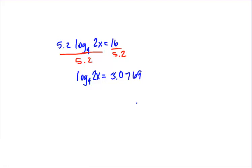When you're working with logarithms, always carry through at least 3 decimal places, and usually you want to go with 4 — because logarithms grow so slowly that 4 decimal places gives you a more accurate answer. Once you get here, go ahead and rewrite the logarithm in exponential form. Take the base of the log, which is 4 — a logarithm is equal to its exponent — so the base is 4, the exponent is 3.0769, and that equals 2x. To get x all by itself, divide both sides by 2.